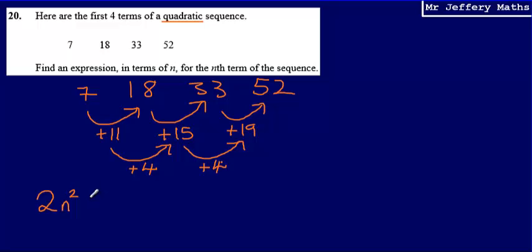Now, the next thing to do is write out what the 2n² sequence is going to be. The first term in the 2n² sequence would be 1² multiplied by 2 for 2. Then 2² multiplied by 2 for 8. 3² multiplied by 2 for 18. And then 4² multiplied by 2 for 32.